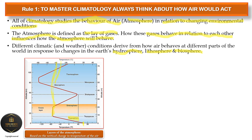After the troposphere, the next layer is the stratosphere. The stratosphere contains the ozone layer. Ozone is a chemical compound represented as O3 — it's very important for the earth because it protects us from harmful solar radiation. Because of human activities that have led to pollution being released into the atmosphere, the ozone layer is being depleted.